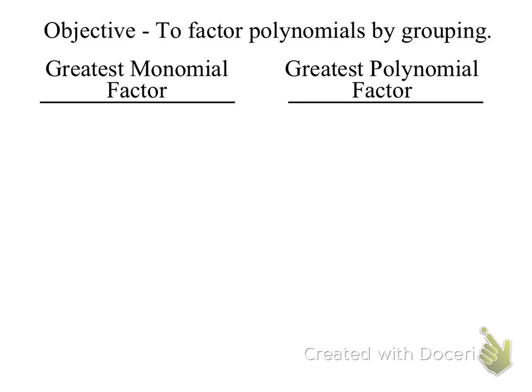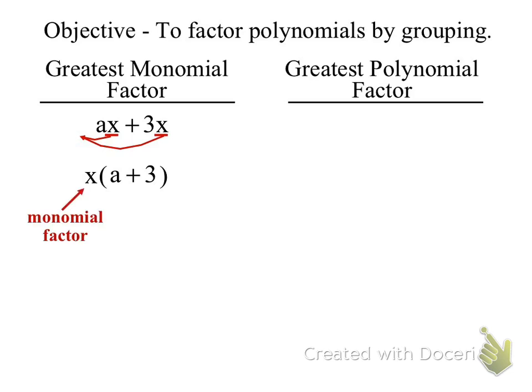So when I have something like AX plus 3X, how would I factor that? We're going to factor out the greatest common factor of X, and what would be left? X times the quantity of A plus 3. What I factored out there was a binomial — one term. Today what we're going to be factoring out is a binomial factor. Binomial means two terms.